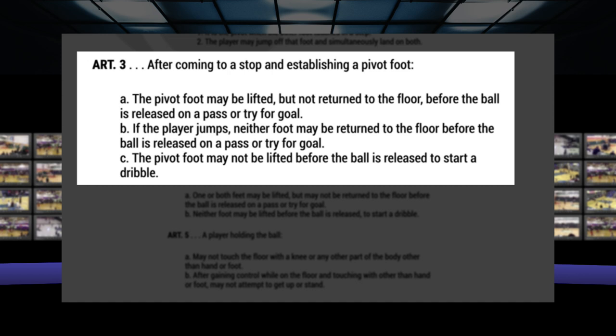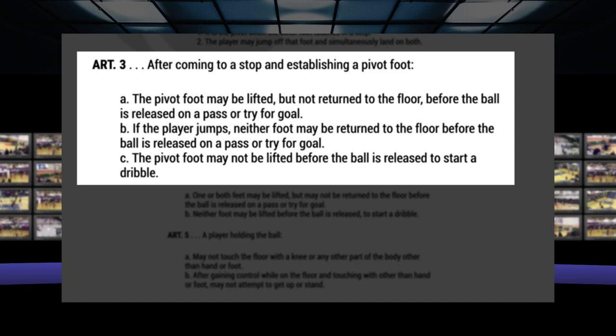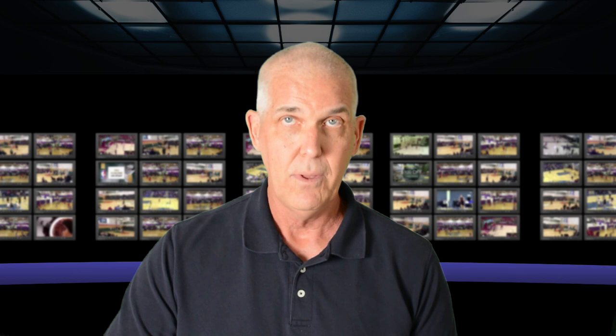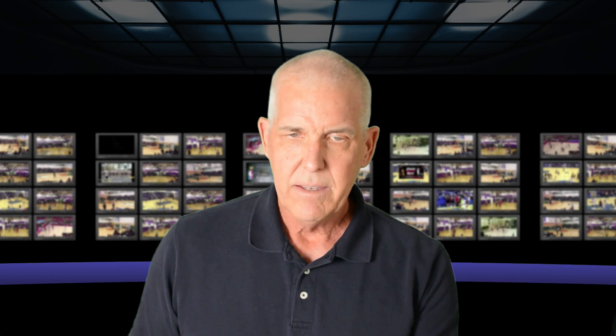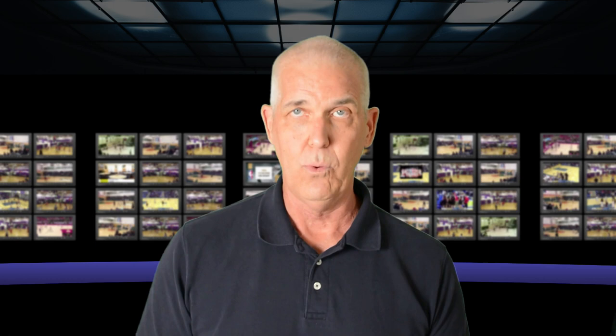B. If the player jumps, neither foot may be returned to the floor before the ball is released on a pass or try for goal — not relevant to the question. Or C. The pivot foot may not be lifted before the ball is released to start a dribble. Our definition clearly defines that it is illegal to release the ball for a dribble after lifting the pivot foot. So C in our question is obviously the correct answer. But what about option D? Drop the ball to the floor — that is not addressed by the rule. This is an important point: not all the things that can happen on the basketball court will be addressed by the rules book. Everything is legal until the rules book says it's not legal.